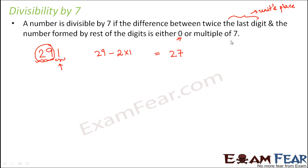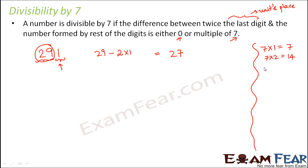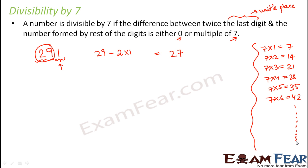This difference must be either 0 or a multiple of 7 for the number to be divisible by 7. Writing down the multiples of 7: 7, 14, 21, 28, 35, 42, and so on. Since 27 is not a multiple of 7, the number 291 is not divisible by 7.